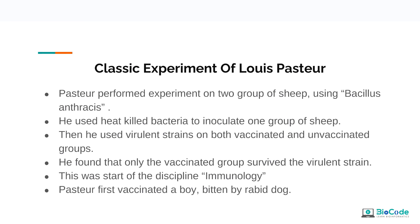Pasteur administered his first vaccine to a human — a young boy who had been bitten repeatedly by a rabid dog. The boy was inoculated with a series of attenuated rabies virus. This vaccine is one of very few that can be successful when administered shortly after exposure, as long as the virus has not yet reached the central nervous system.